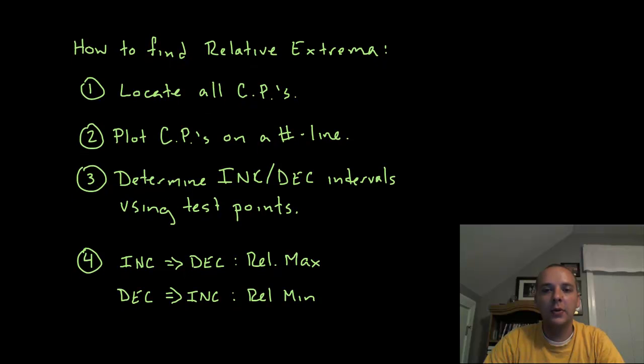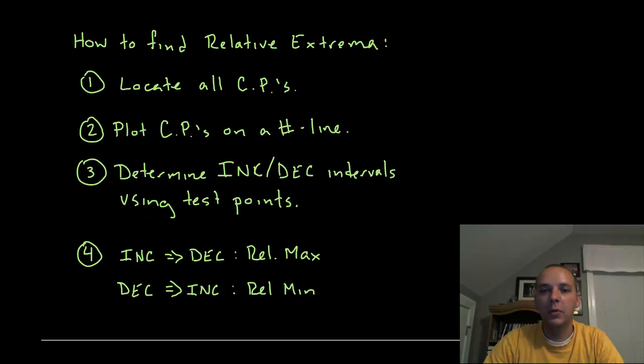Now how do we find these relative extrema? We know what they are, but if I were to actually hand you a function without a graph, how would we find them? Well, I know they're written as steps, but they're actually pretty intuitive. Just think about the concept rather than just these listed out as formal steps. Find all your critical points. Take the derivative, set it equal to zero, see where it does not exist. Again, I'm not saying that will be relative extrema, but it's our best shot at finding relative extrema. Plot those critical points on a number line.